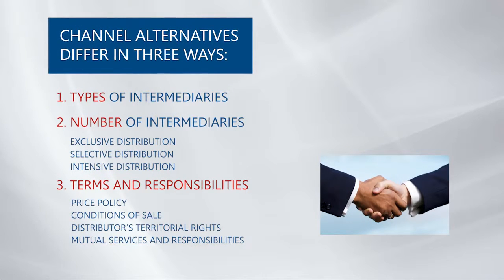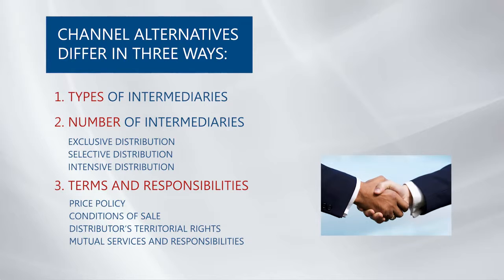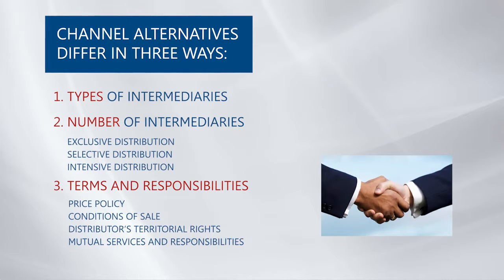A third factor within channel alternatives is that we have to consider not only the number and types, but also the responsibilities of each channel member. Producers and intermediaries need to agree on the terms and responsibilities of each channel member, including aspects like price policy, conditions of sale, territory rights, and the specific services to be performed.